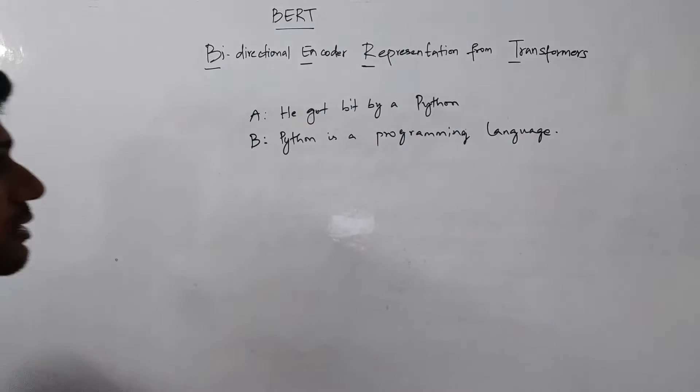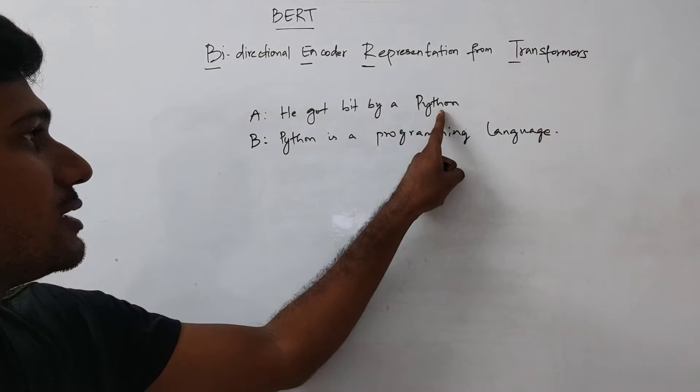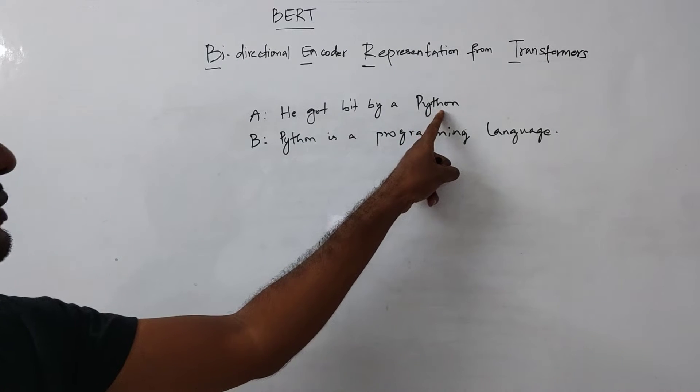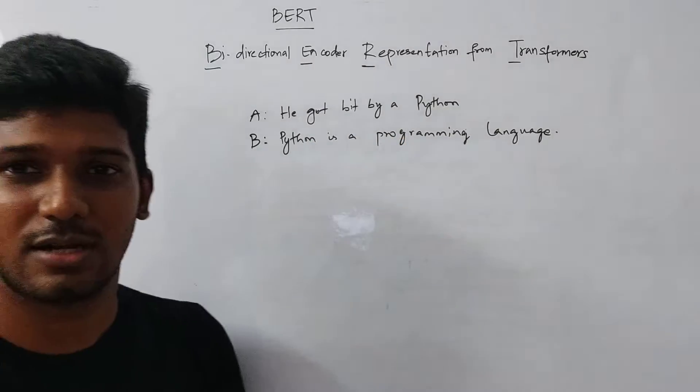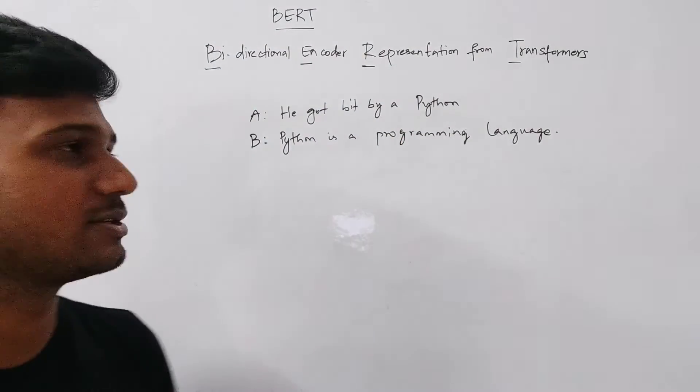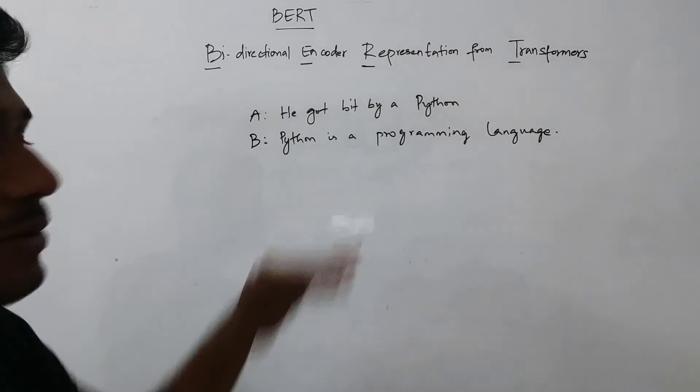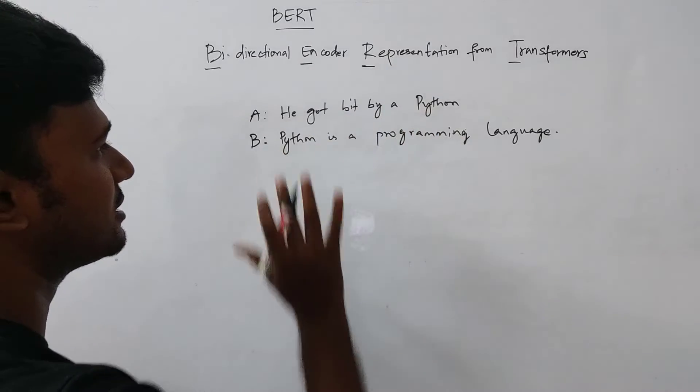So based on looking at both of these sentences, we as humans understand this python is basically different from this python. The python here refers to a snake. Whereas the python here refers to the programming language that we as engineers and scientists use. So this understanding, we know how this works, but we need to make sure the machine understands this one.